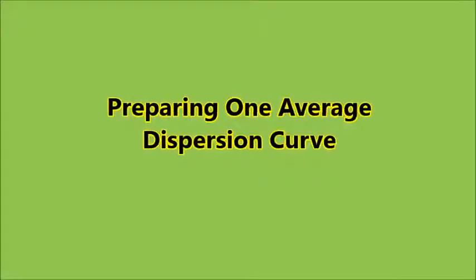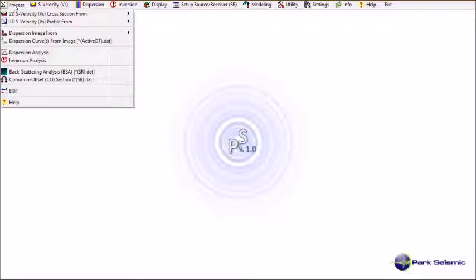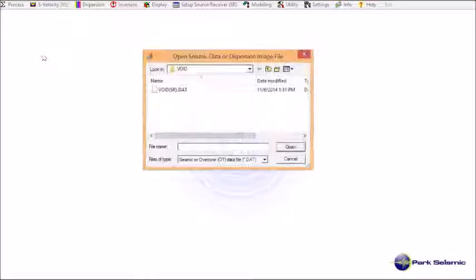I'm going to demonstrate how to generate backscattering analysis map by using the sample dataset called VoidSR.DAT. First, I have to prepare a dispersion curve. Rather than generating all the dispersion curves for all 50 individual records included in the sample data, I'm going to generate one average dispersion curve by processing all those 50 records. So, first, go to process, and then dispersion analysis.